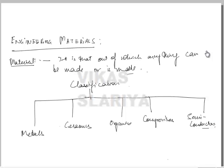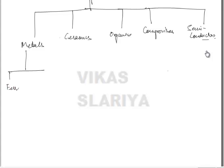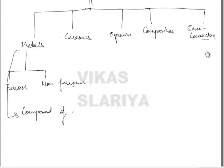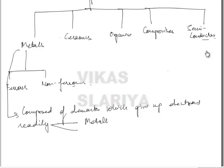What is a material? It is that out of which anything can be made or is made. Metals can be further classified into ferrous and non-ferrous. Metals are composed of elements which give up electrons readily, thus providing a metallic bond and giving electrical conductivity.